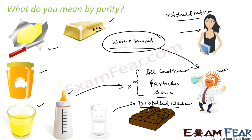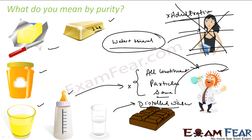So there are different perspectives. From a common man's perspective, purity means something which doesn't have any adulteration. But in this chapter, we will talk from the scientist's perspective. As per scientists, anything that is pure should have all constituent particles the same. For example, pure water should have only water particles — no other minerals. Pure gold should have only gold particles — no copper, zinc, or any other metal.